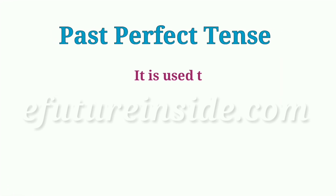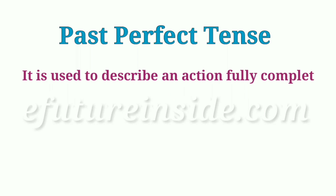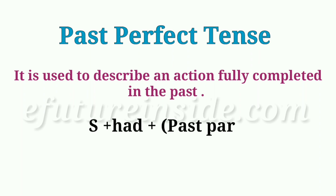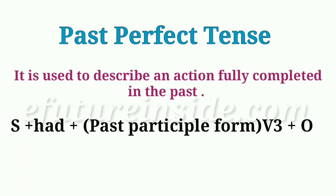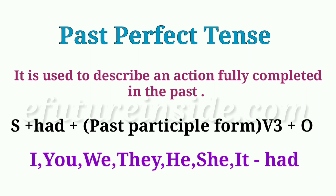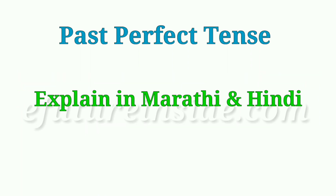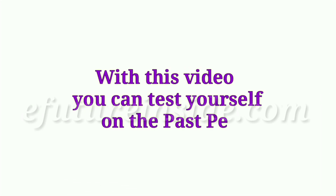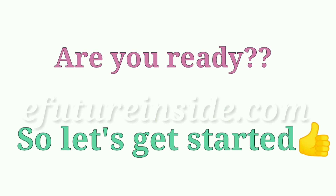Past perfect tense is used to describe an action fully completed in the past. And the structure is: subject plus had plus past participle form of the verb — that means third form of the verb — plus object. In this tense we always use 'had' no matter what the subject is, which we already learnt in our previous videos. You can watch the detailed video explanation in Marathi and Hindi by clicking on the link in the description below. With this video you can test yourself on the past perfect tense. Okay then, are you ready? So let's get started.